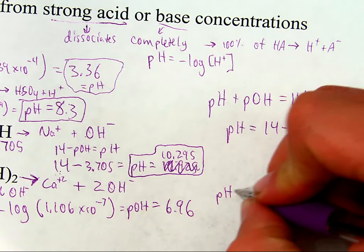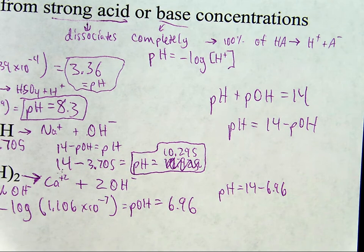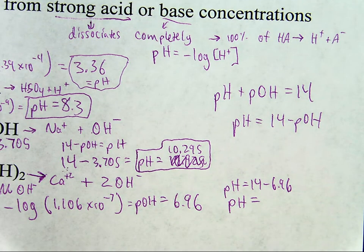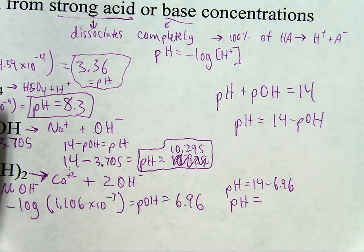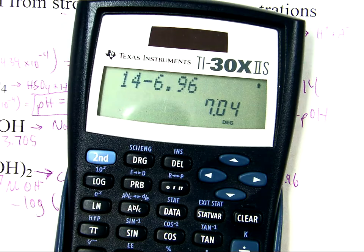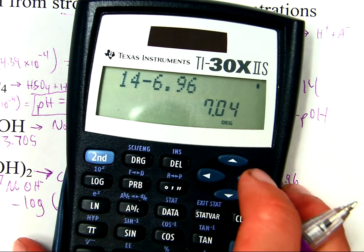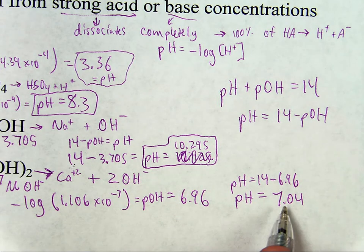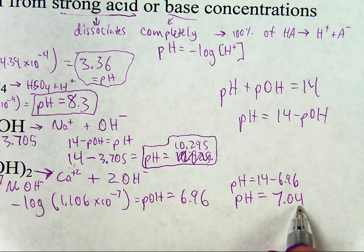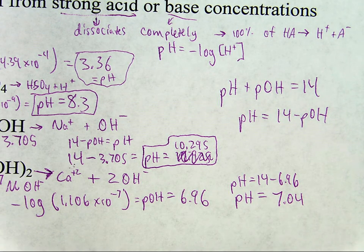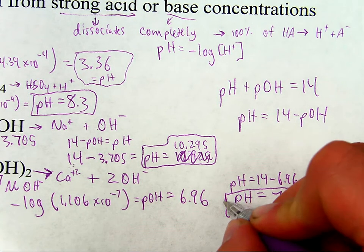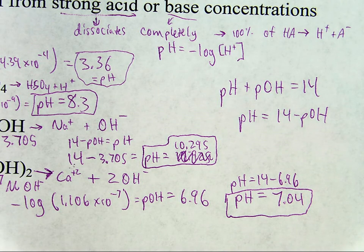And then pH equals 14 minus 6.96, which means the pH is equal to 7.04. And this went out to the 100th place, therefore this goes out to the 100th place. And that takes care of that little bit.